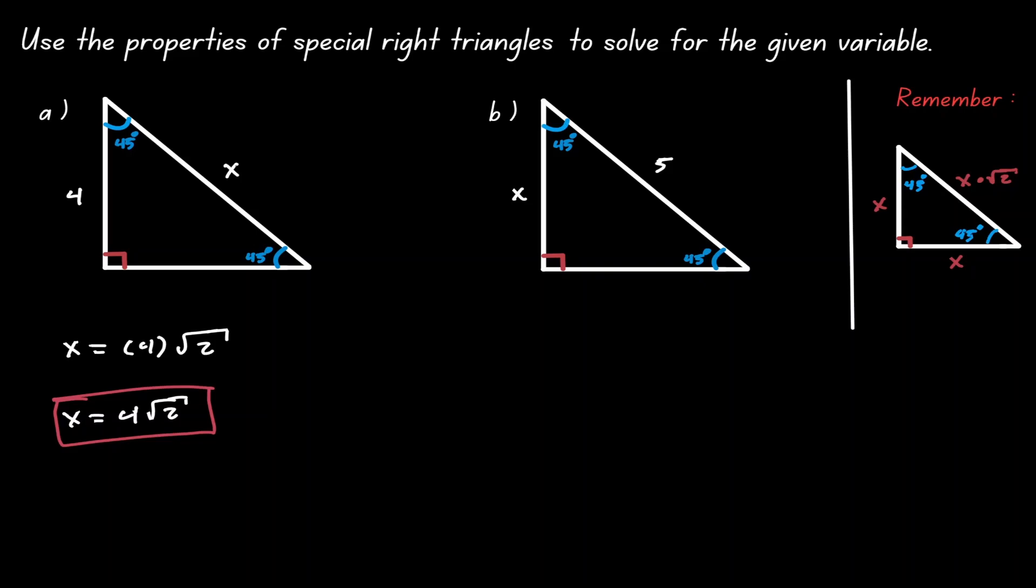In the second example, things are a little bit different. Notice where the unknown is. The unknown is the length of one of the legs of that right triangle. And what we know, we know the value of the hypotenuse. But notice that we cannot use the Pythagorean theorem right away because we do not know the length of the bottom leg.